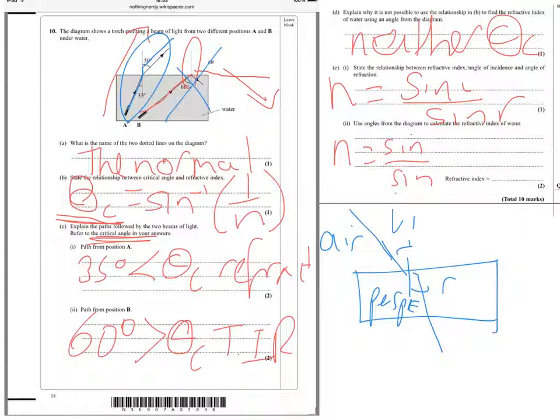So instead of using the incidence angle in the diagram 35 degrees, we're going to use the refraction angle and imagine it's going in the opposite direction. So it's going to be sine 50 over sine 35 instead. And if you put that into your calculator, that comes out as 1.34.